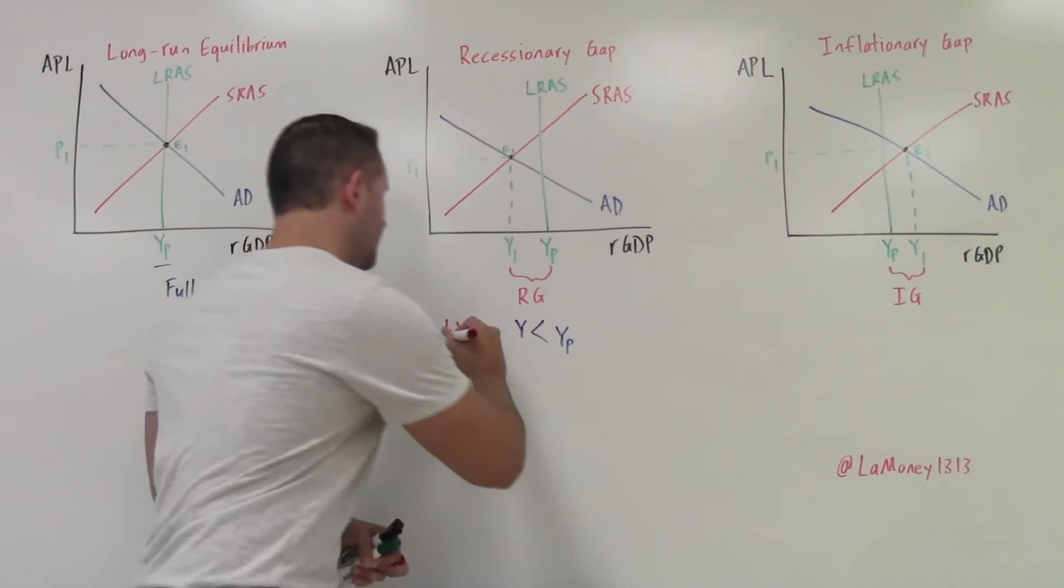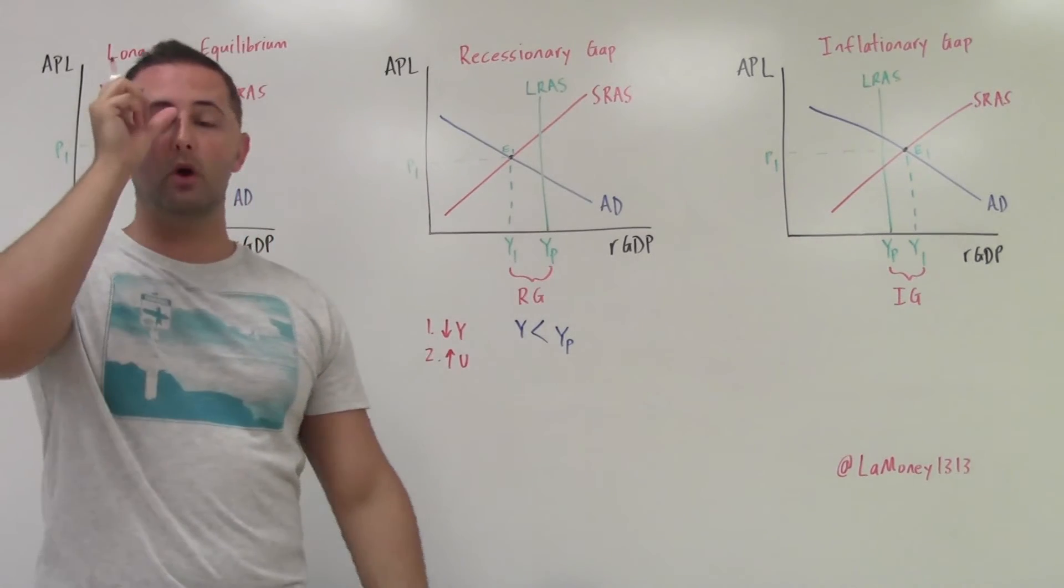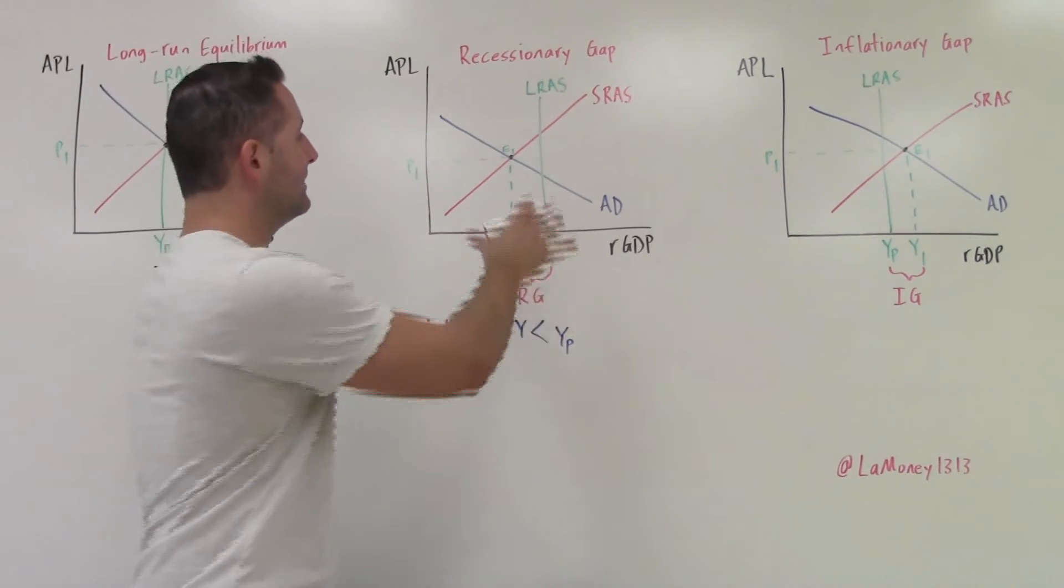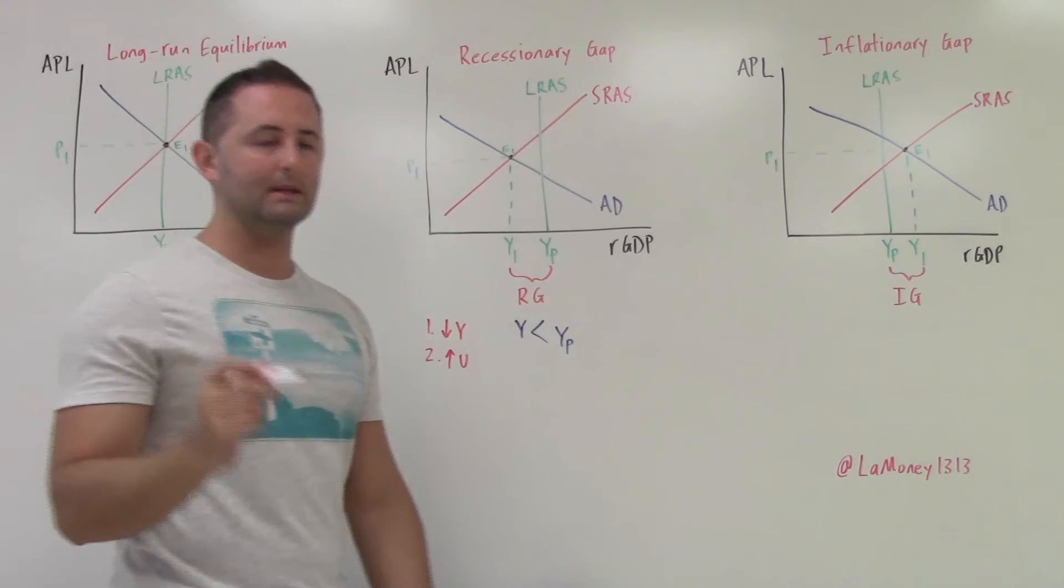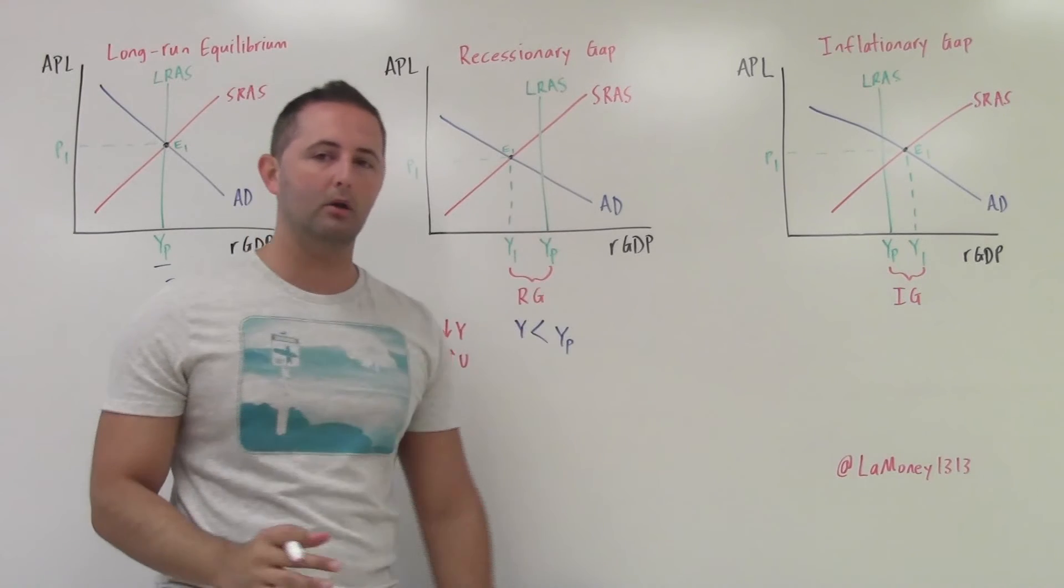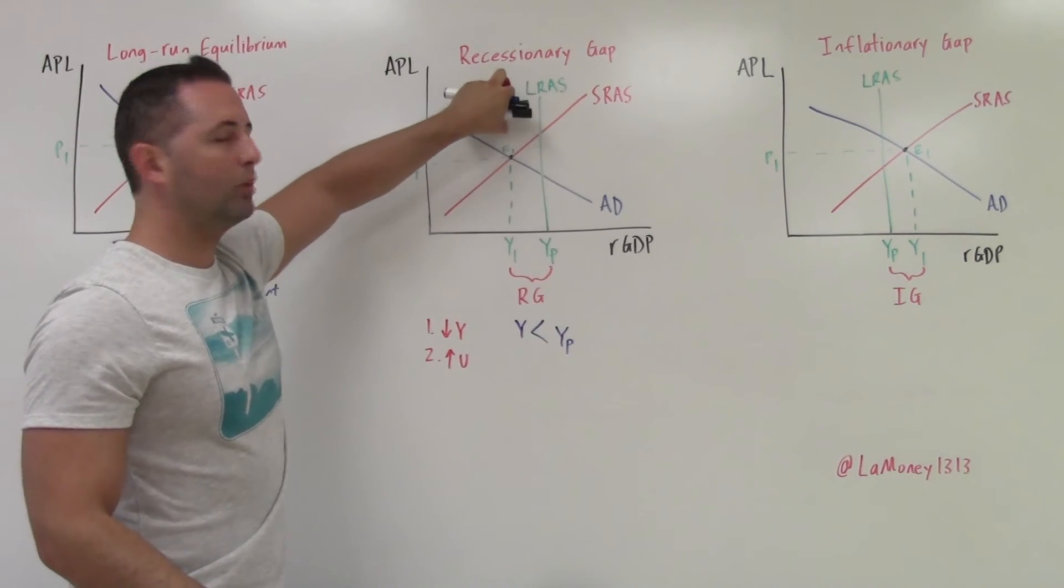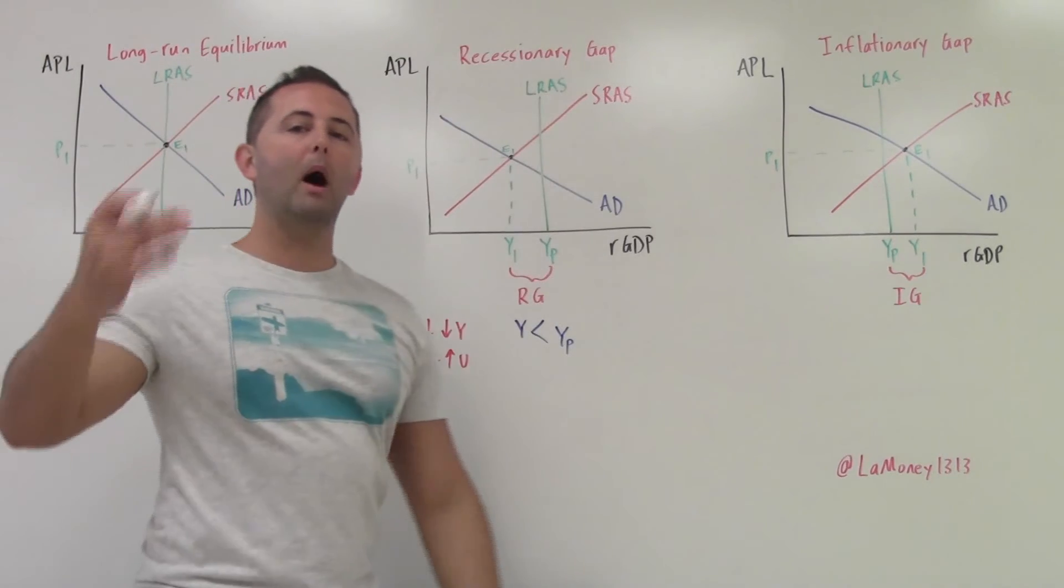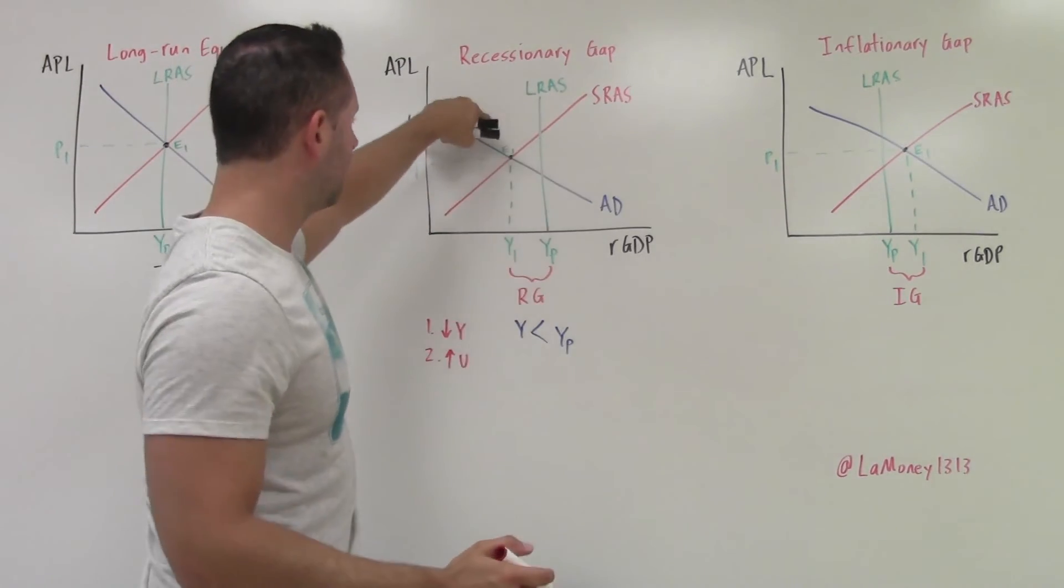It is below potential. It means that we are going to have higher unemployment. So another key thing, by looking at our aggregate supply and aggregate demand model, we can know what unemployment is like. Even though there are no numbers on this model, we know right now that at E1, actual unemployment is above the natural rate. So we have high unemployment here.